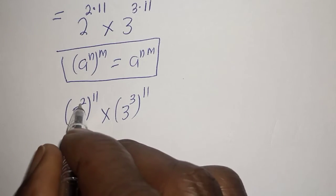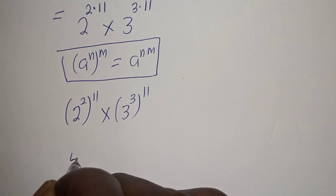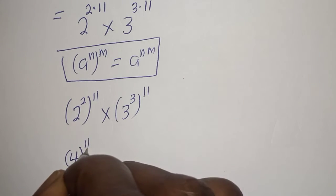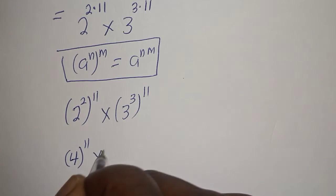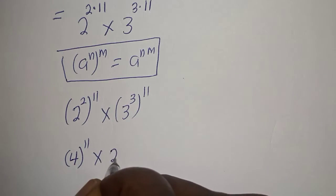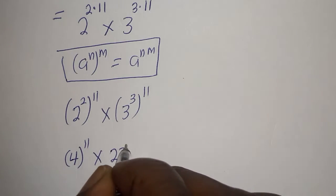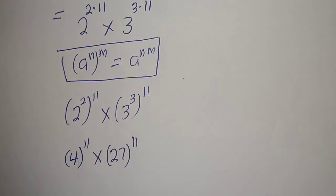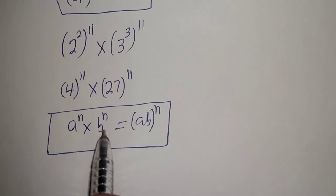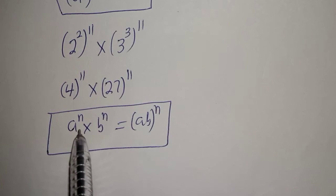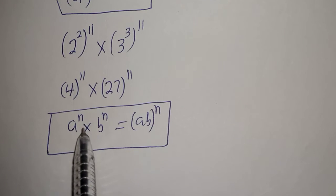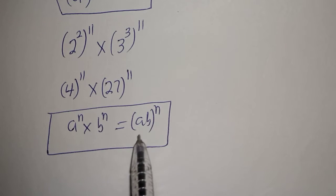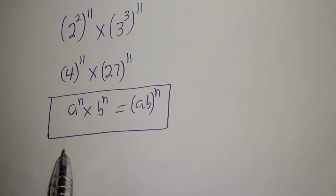Then, 2 raised to power 2 is 4, so we have 4 to the power of 11, multiplied by 3 raised to power 3, which is 27, to the power of 11. Take note that if you have a raised to power n multiplied by b raised to power n, this is equal to a times b, raised to power n.